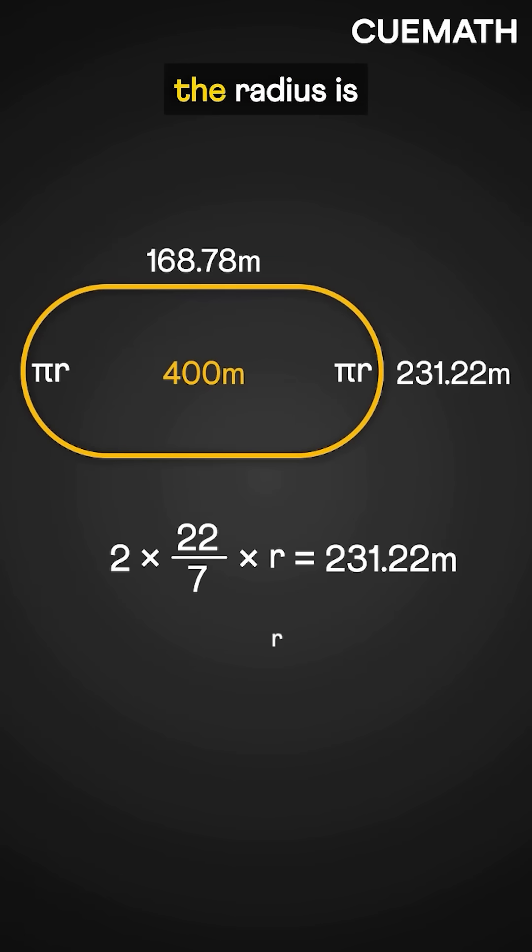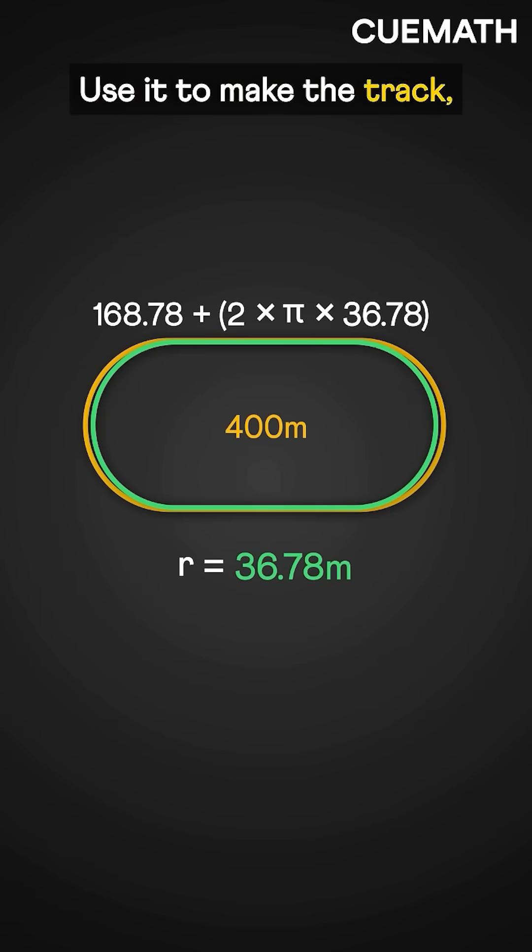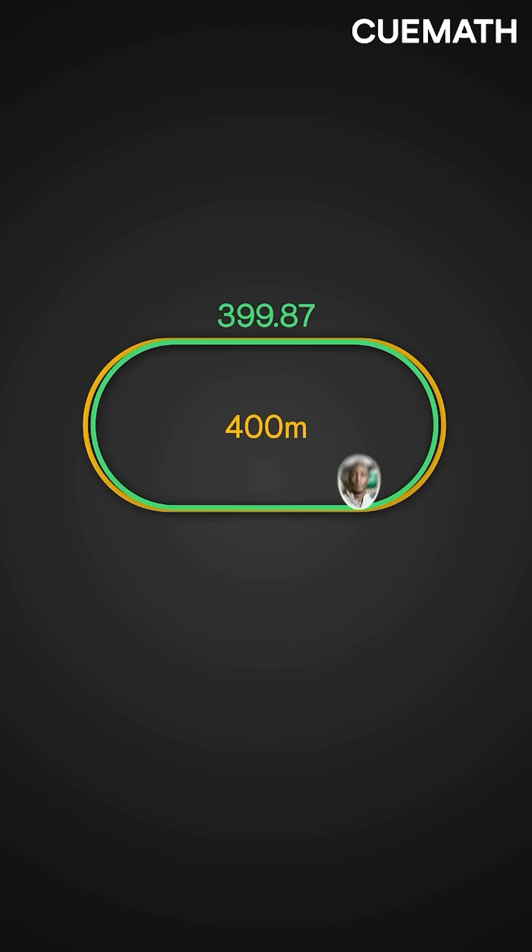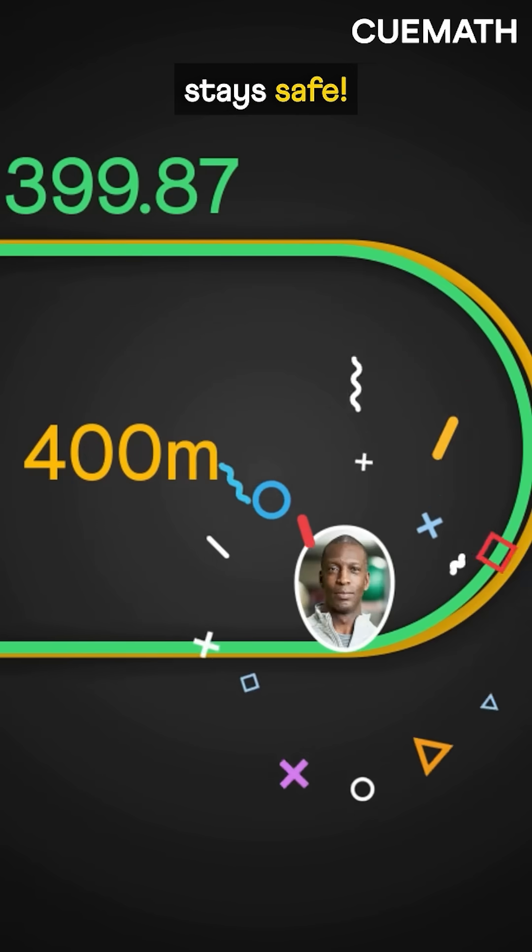Using 22 over 7, the radius is 36.78 meters. Use it to make the track, and we end up with a slightly shorter one. But no big deal. The 400-meter world record stays safe.